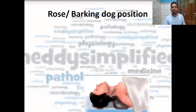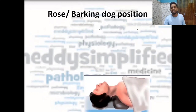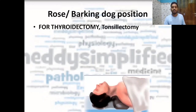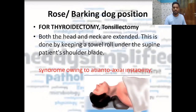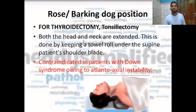The last position in our discussion is the Rose position, also called the barking dog position. It is used for procedures related to the neck, such as thyroidectomy and tonsillectomy. The patient is lying in supine position, but both the head and neck are extended — achieved by placing a sandbag or towel roll under the shoulder blade. It is contraindicated in patients with Down syndrome because of atlantoaxial instability.